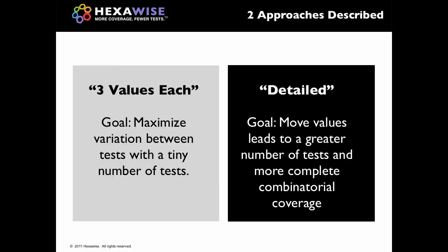We'll look at two different software applications and identify test inputs for each of those. As we do that, we'll use two different approaches. The first approach will be very quick and dirty — no more than three values per parameter. The second approach will be more detailed. It's going to allow us to hit business rules and requirements with more specificity, but it's going to result in a larger number of tests being created.